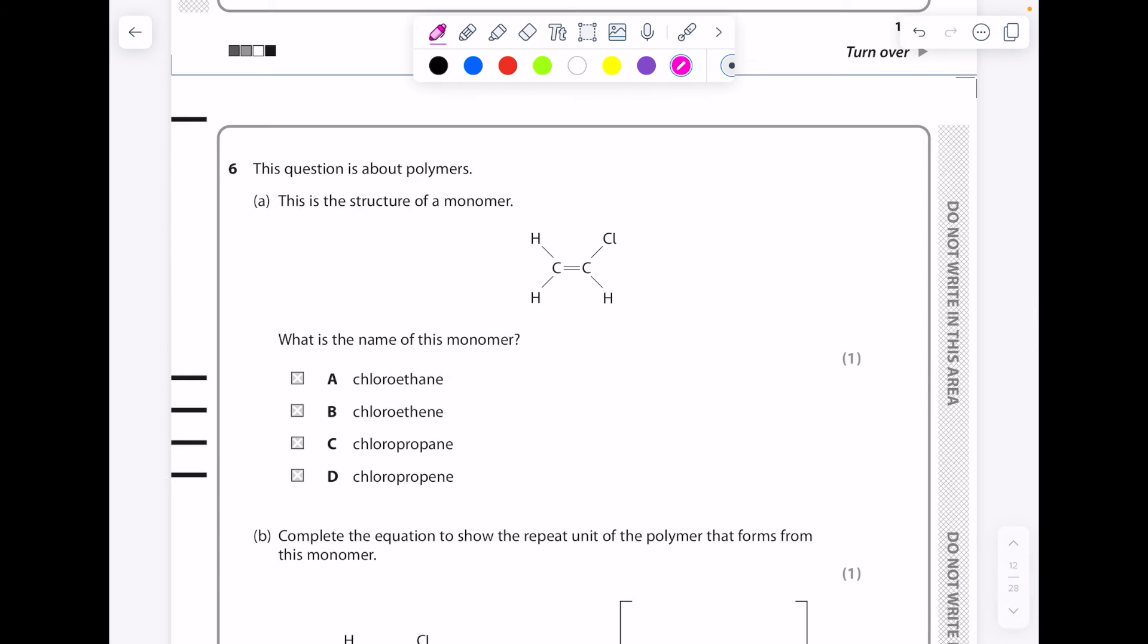This question is about polymers. This is a structure of a monomer. What is the name of this monomer? So it's unsaturated, which means we need an -ene. It's only two carbons, so that's why it's chloroethene. There's the chloro.